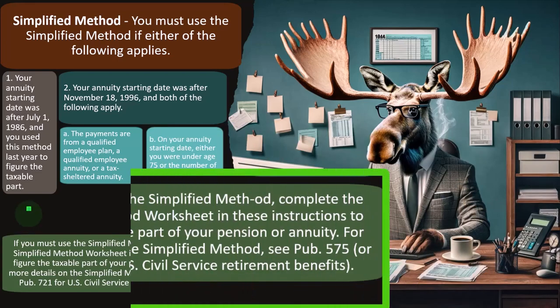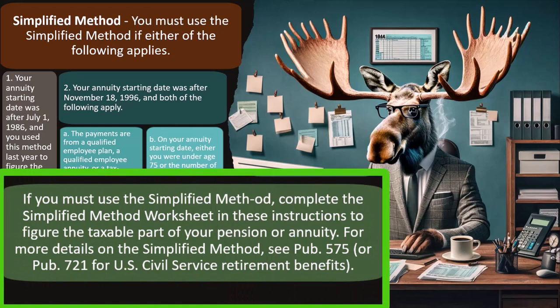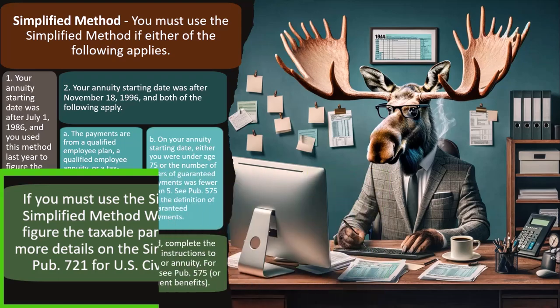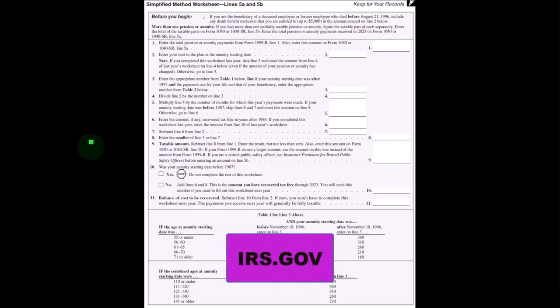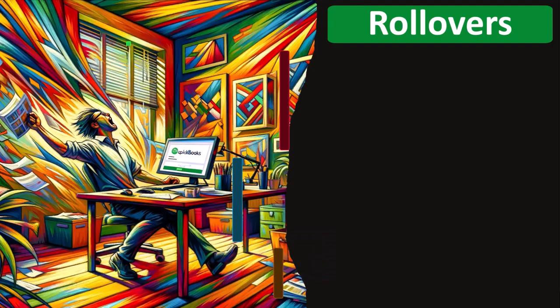If you must use the simplified method, complete the simplified method worksheet in these instructions to figure the taxable part of your pension or annuity. For more details on the simplified method, see Publication 575, which you can find on the IRS website. Here's a quick look at it — we won't go into it in detail here.